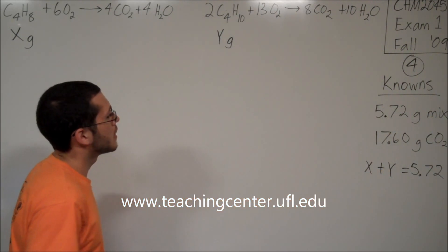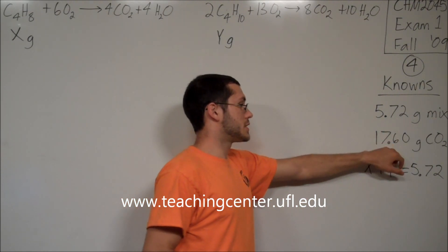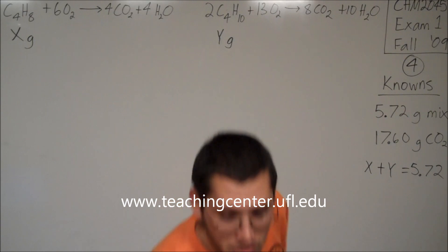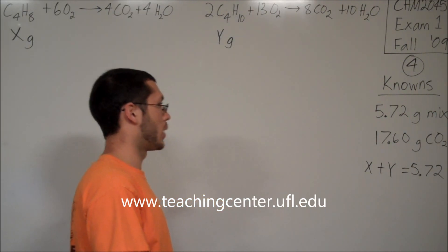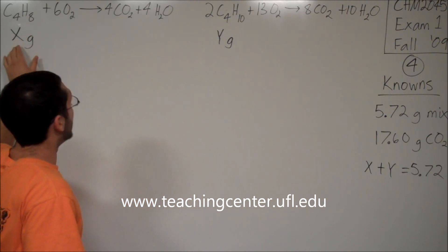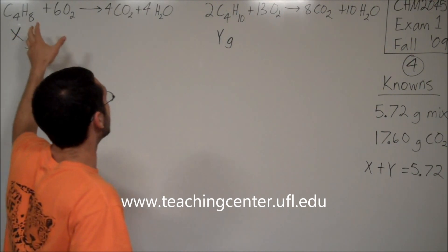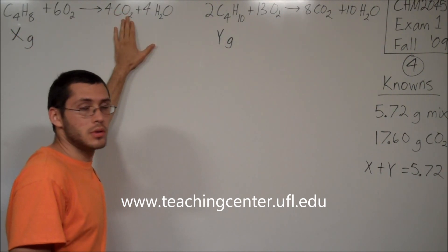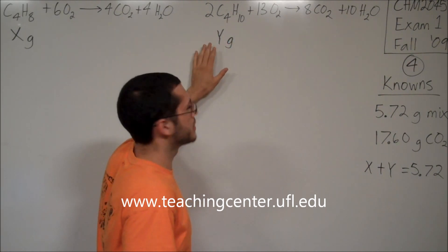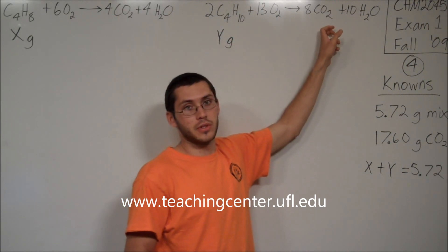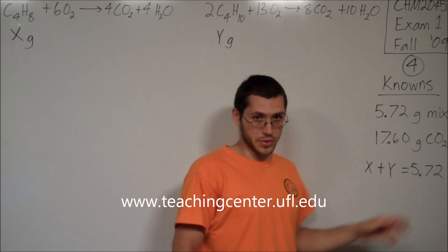Next, I look at the second known: 17.60 grams of CO2 was produced. What made the CO2? The x grams of butene, when burned, gave some CO2. And however much butane I had — y grams — gave more CO2. Those two CO2 amounts produced add up to give me the 17.60 grams.